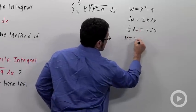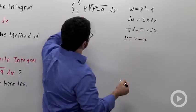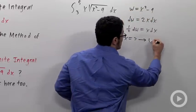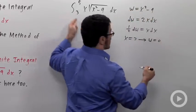x equals 3, for example, this bottom limit. If you plug 3 in here, you get 9 minus 9 is 0. w equals 0. So the 3 is going to turn into a 0.